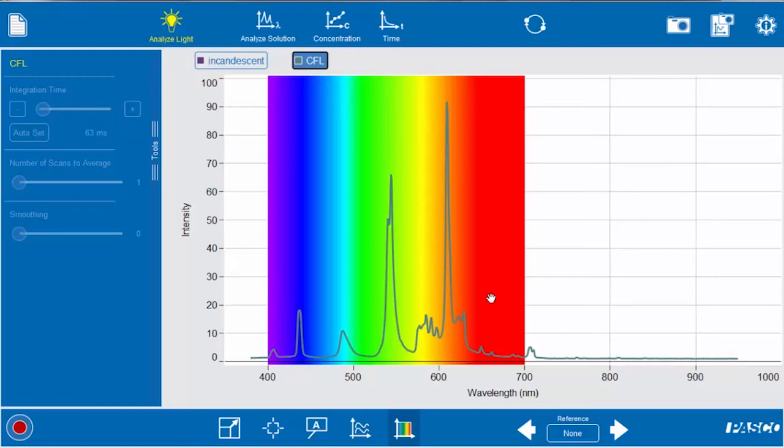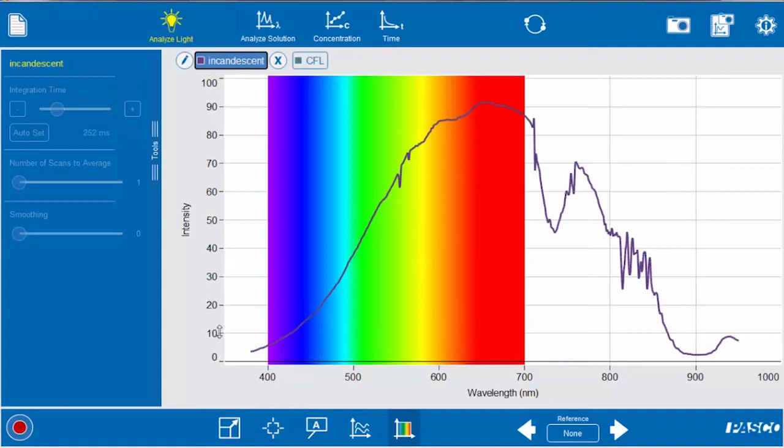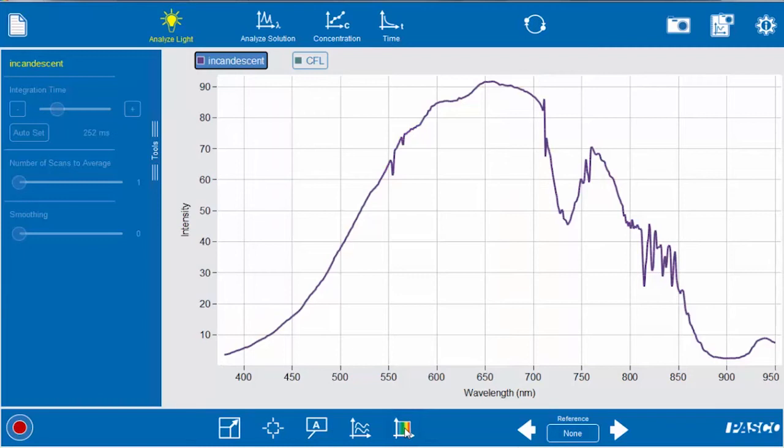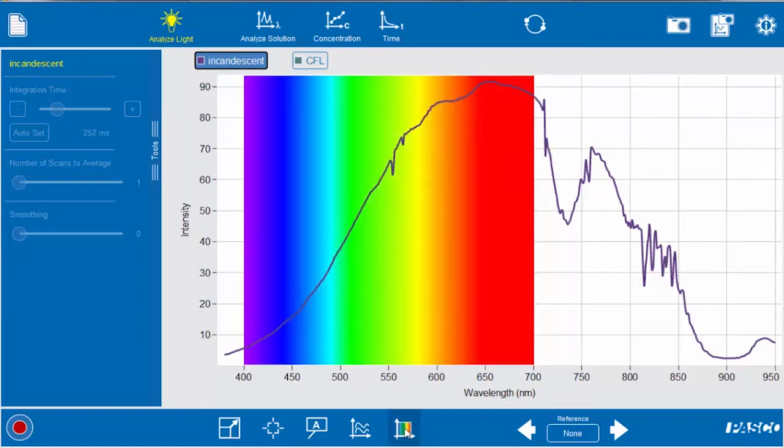Now with our software we can take a look at our two different spectrums and compare them. So the first thing we can do, let's switch back to the incandescent. Down on the bottom left there's an auto scale button, so if you press that it scales it so that your spectrum takes up the maximum portion of the screen possible. And this button over here turns on and off the rainbow depending on if you like it, but this button overlays the two spectra.